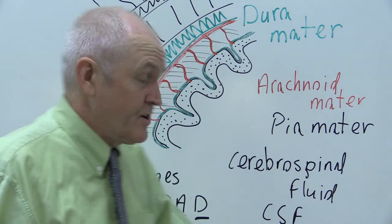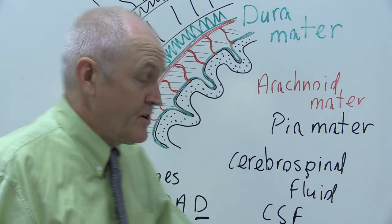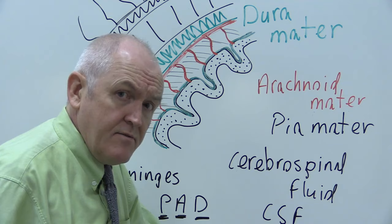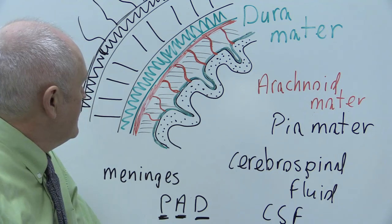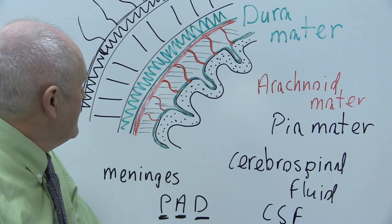If you want to take a sample of this cerebrospinal fluid, it can be tapped off from the area of the lumbar vertebrae, because the fluid extends down the vertebral column as well. So the protection of the brain from external damage via the meninges and the cerebrospinal fluid.